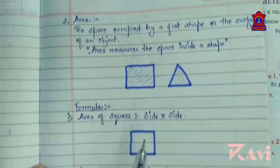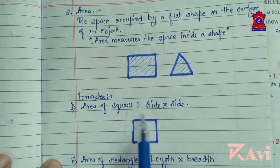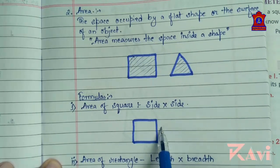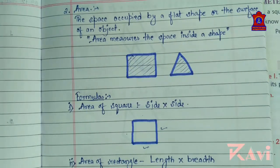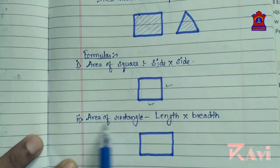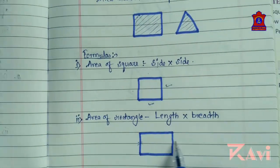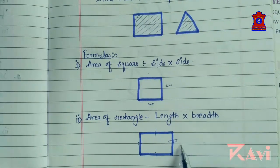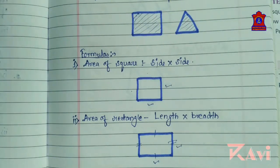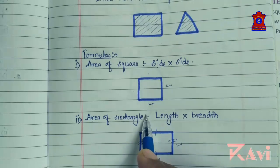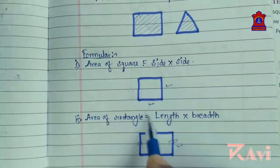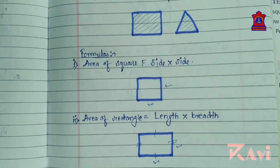There are formulas to find area. Area of a square equals side into side — since a square has all 4 sides equal, multiplying this side into this side gives you the area of a square. Area of a rectangle: these two sides are equal and the other two sides are equal. The formula is: area of rectangle equals length into breadth. When you multiply length with breadth, you get the area of the rectangle.